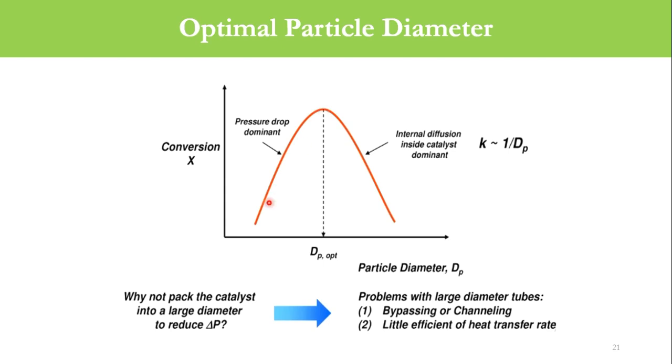Now the next question is, why not pack the catalyst into large diameter tubes to reduce delta P? There are two problems with this: bypassing or channeling, and little efficiency of heat transfer rate. It means the heat transfer rate is reduced if we increase the large diameter and then pack these in the system.